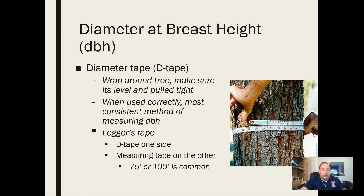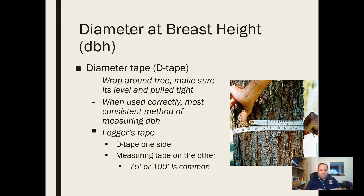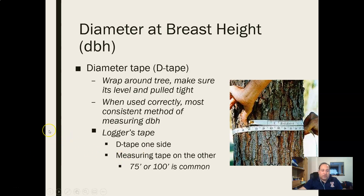With a logger's tape, your measuring tape side is usually 75 or 100 feet. The other side is the diameter tape, which is the same as the measuring tape but divided by 3.14 to account for the circumference formula of a circle.